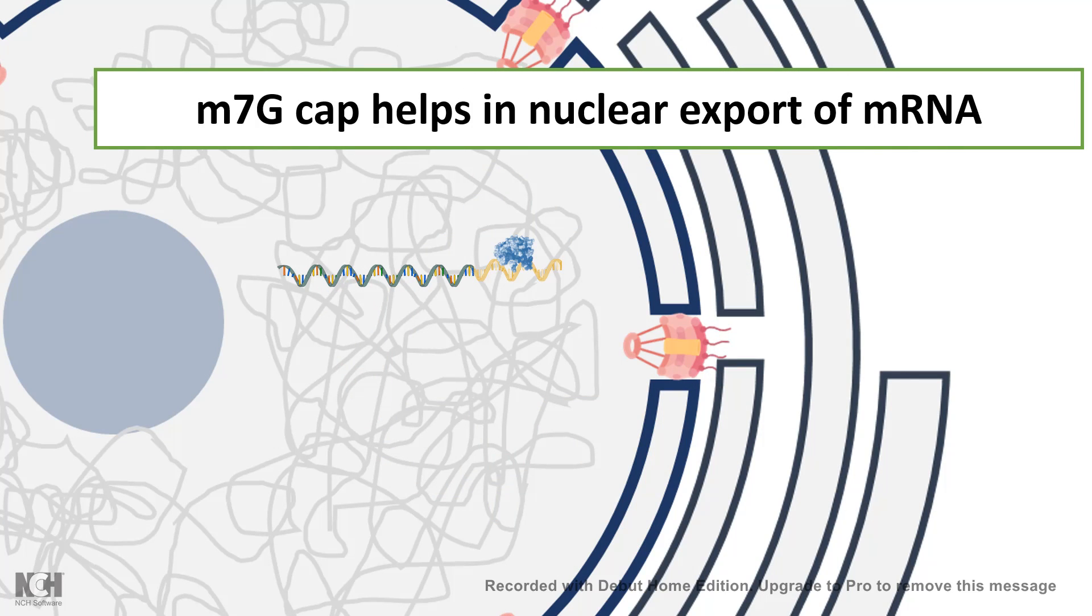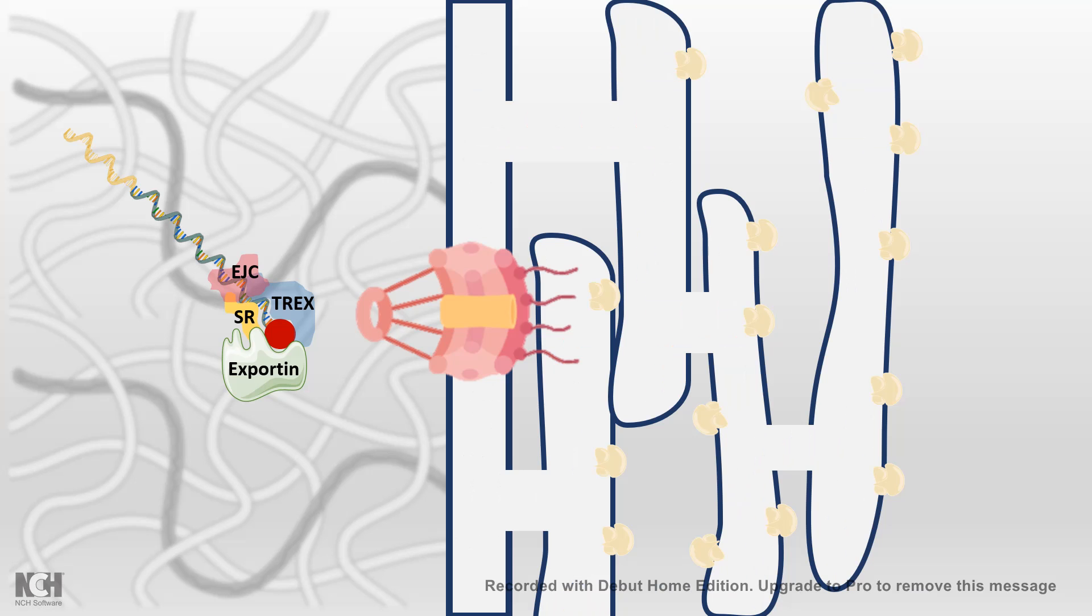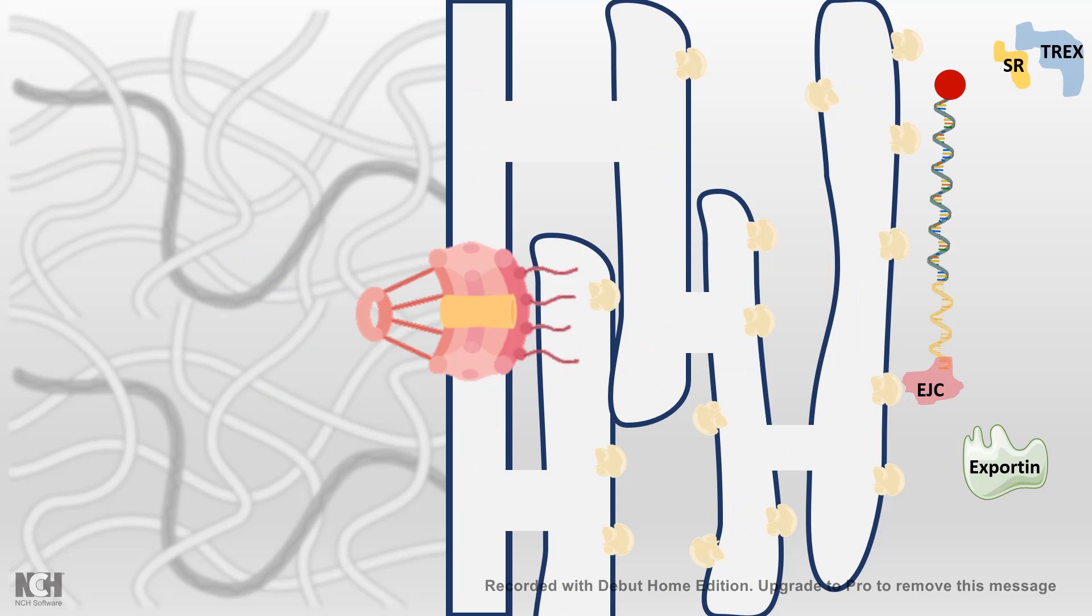M7G cap helps the nuclear export of the mRNA. Because it is the M7G cap which interacts with TREX, SR, or EJC proteins and protein complexes, and then all of these complexes direct it towards the exportin, and that helps the mRNA to be exported out into the cytoplasm. In the cytoplasm when it is exported out, it can sit on the ribosomes and be translated.